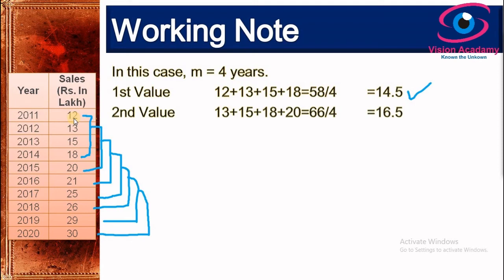For the second value, we discard the first data point, which is 12, and consider 13, 15, 18, and 20, which accounts for 66. Dividing by 4 gives a second value of 16.5.